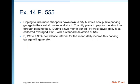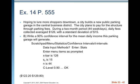We're asked to write a 90% confidence interval for the mean daily income. We use our calculator: scratchpad, menu, statistics, confidence intervals, T interval. For data input, choose stats since we have summary statistics. Enter X-bar = 126, S = 15, N = 44, and confidence level = 0.90. The result gives C lower and C upper equivalent to $122.20 and $129.80.